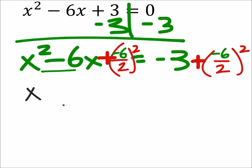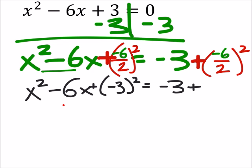So, this now becomes x squared minus 6x. I'm going to show all the steps. And this is plus negative 3 squared equals negative 3 plus, it's the same thing, negative 3 squared.